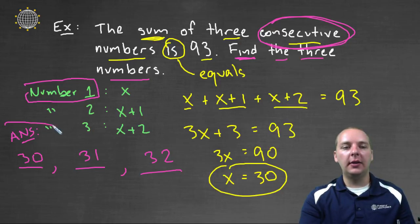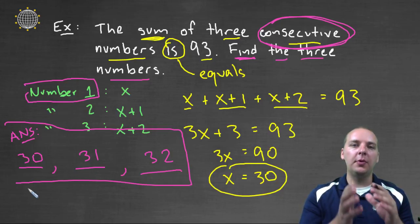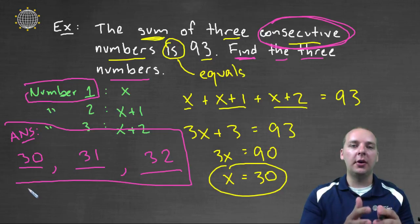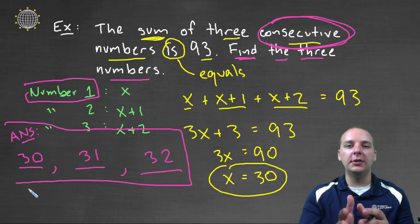So this would be our final answer, three consecutive numbers: thirty, thirty-one, and thirty-two. So again, just to recap, you take your word problem, you identify what your unknowns are, you use variables to write those down, then you take those variables and you use that to write it as an equation, you solve the equation to get your final answer.